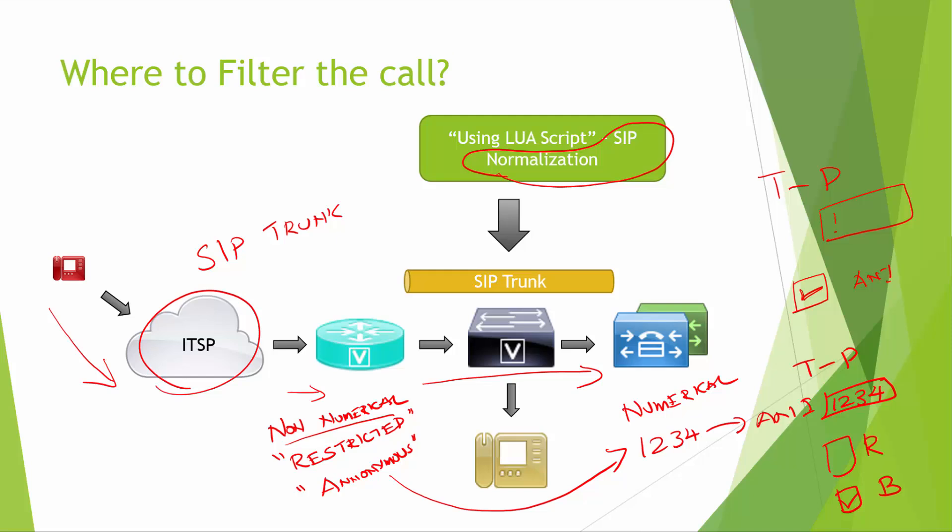With the SIP normalization script, we convert those non-numerical strings — since CUCM can't process them — into numerical values, and then match them with a translation pattern asking the digit analysis engine to process based on the ANI. If it matches a certain ANI we defined, it would be either blocked or routed to the next hop.